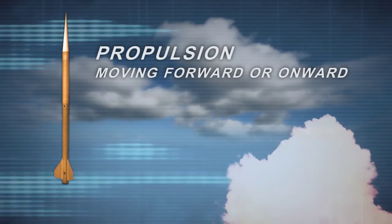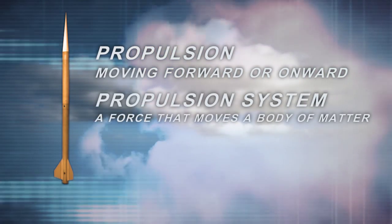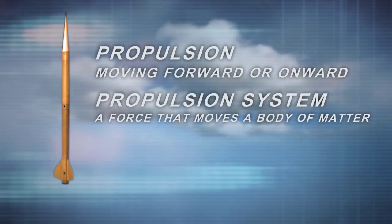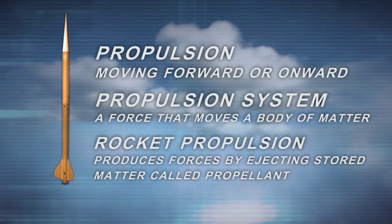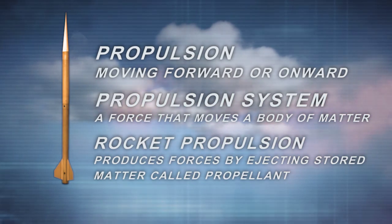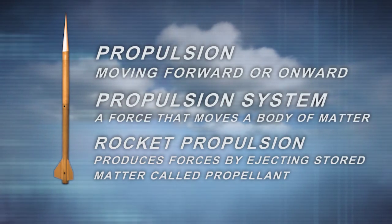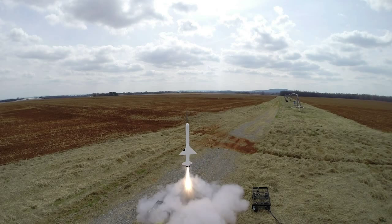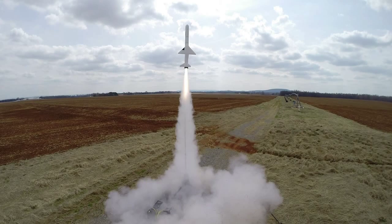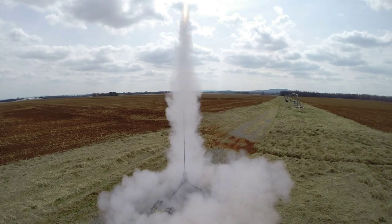Propulsion means moving forward or onward. Therefore, a propulsion system provides a force that moves a body of matter. Rocket propulsion is a type of propulsion that produces forces by ejecting stored matter called propellant. In high power rocketry, we use chemical rocket propulsion, where high pressure combustion reactions of the propellants create high temperature gases that are ejected out of the vehicle. The combustion chamber is where the chemical reactions take place.